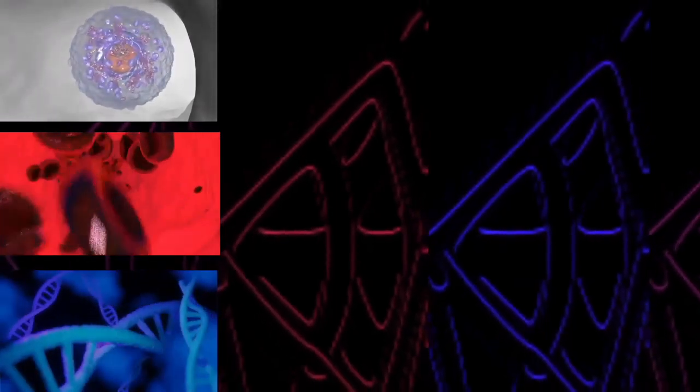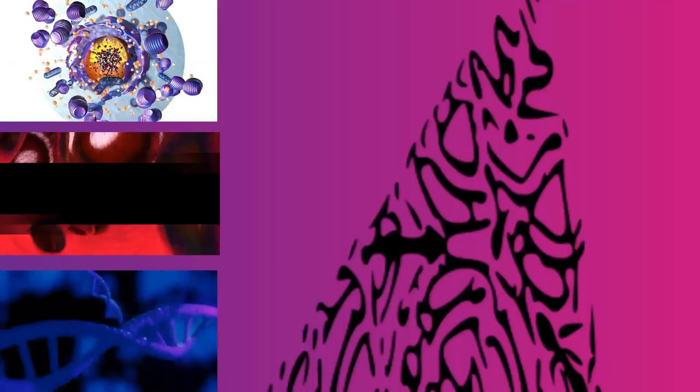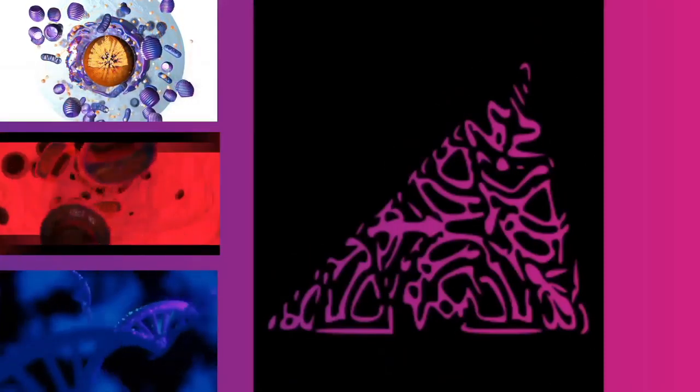During anaphase A, the cohesins that bind sister chromatids together are cleaved, forming two identical daughter chromosomes. Shortening of the kinetochore microtubules pulls the newly formed daughter chromosomes to opposite ends of the cell.